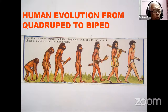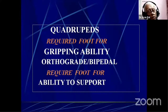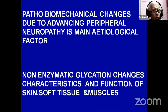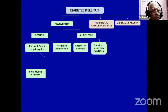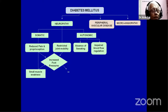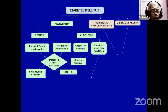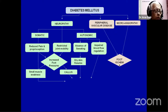Both contribute to foot problems. Quadrupeds require feet for gripping ability; bipeds like human beings require them for support. Pathobiomechanical changes due to advancing peripheral neuropathy is the main etiological factor, and non-enzymatic glycation changes the characteristics and function of all tissues of the foot. Every diabetic patient will run through this algorithm during his lifetime. The major task for prevention is to prevent the epidermal barrier — the skin — from breaking down in spite of all deformities.